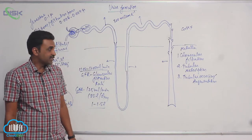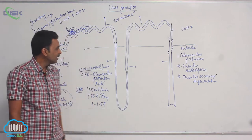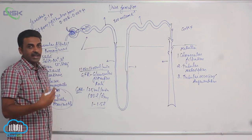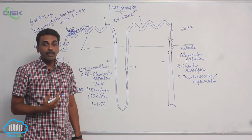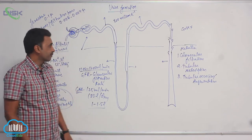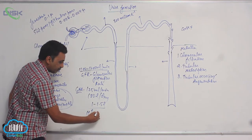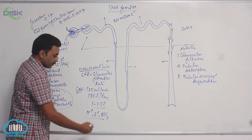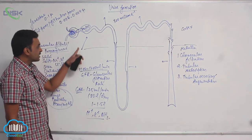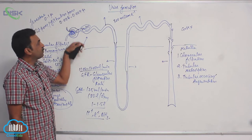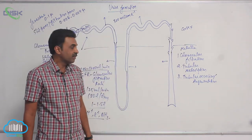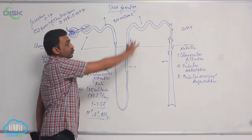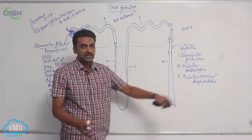This process of reabsorption is called tubular reabsorption, which is the second important mechanism. There is also tubular secretion, where some substances like H+ ions, K+, and ammonia move from the interstitial fluid into the lumen of the nephron. Both tubular reabsorption and tubular secretion occur throughout the renal tubule.